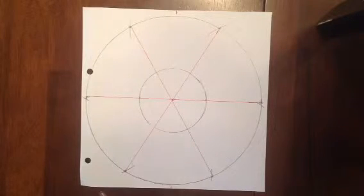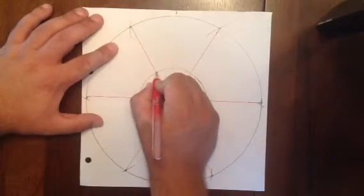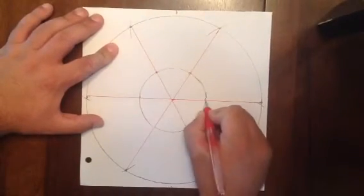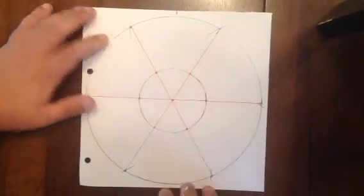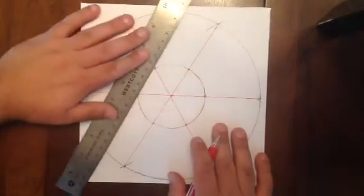Now the last part says to connect where the diameters meet the smaller circle, connect those six points in a row so that they make a hexagon. So that means we're talking about these points right here. And we're going to connect them with a straight line to make a hexagon.